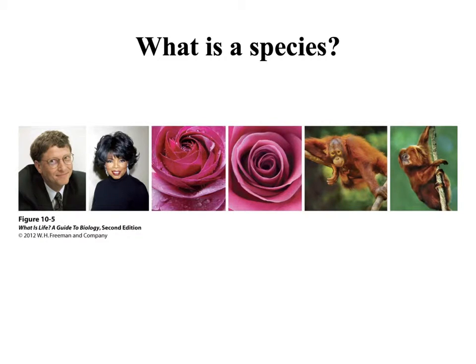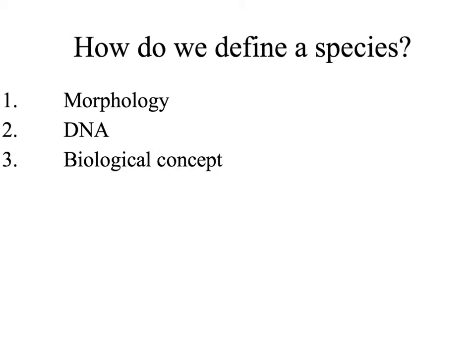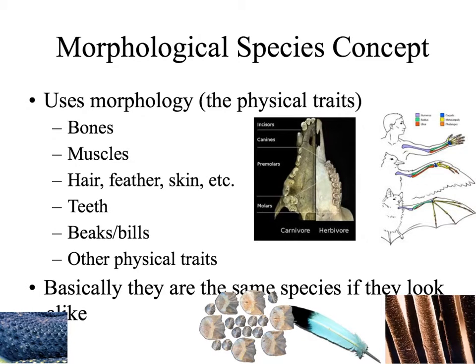A species is a group of organisms that have a specific set of characteristics. Generally, these organisms are also able to interbreed. There are many ways to define a species, and we are going to look at three different mechanisms or species concepts that help us group organisms into a specific species. The first is the morphological species concept. Morphology is the physical traits or anatomy of an organism, so the morphological species concept uses these structures to group organisms.